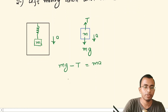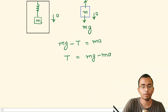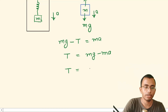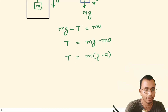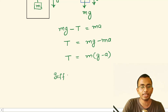From here we can find T: T equals mg minus ma, therefore T equals m(g minus a). This is our weight in this case, and here we can say g effective is g minus a.